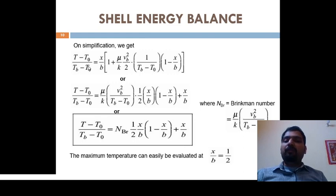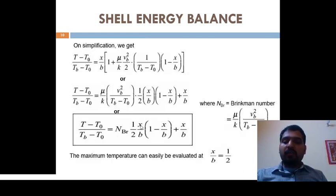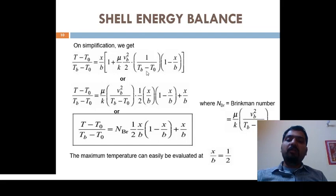On simplification, collecting temperature profile terms on one side, we get the dimensionless temperature profile: (T − T0)/(Tb − T0) = x/b · [1 + (μ/k)·(Vb²/2)·(1/(Tb − T0)) · (1 − x/b)] + x/b.